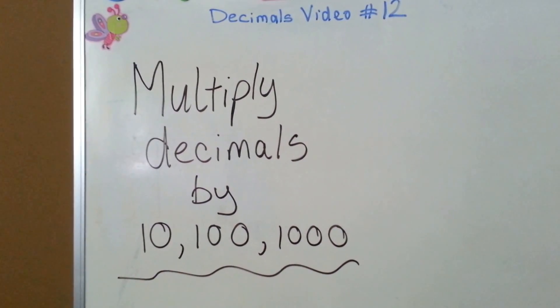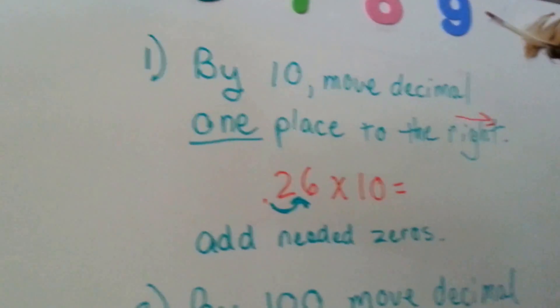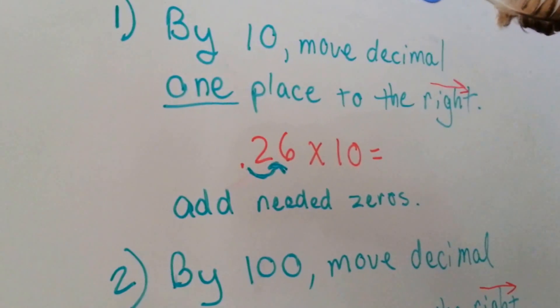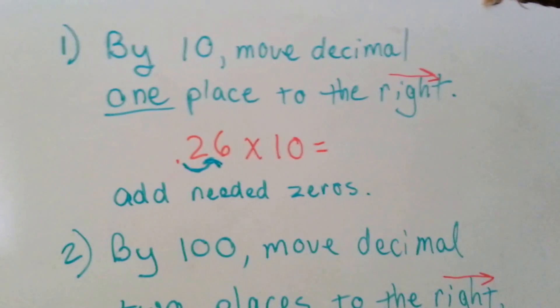Multiplying decimals by ten, one hundred, or a thousand. Whenever you're going to multiply a decimal by ten, hundred, or a thousand, all you have to do is move the decimal place to the right.